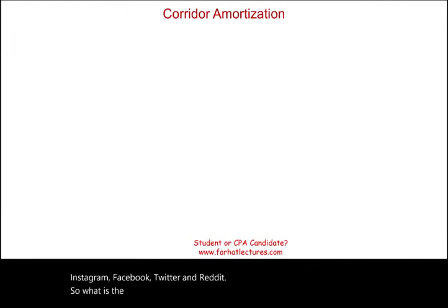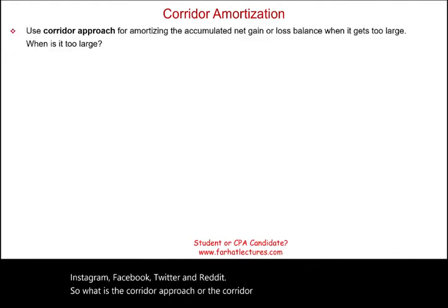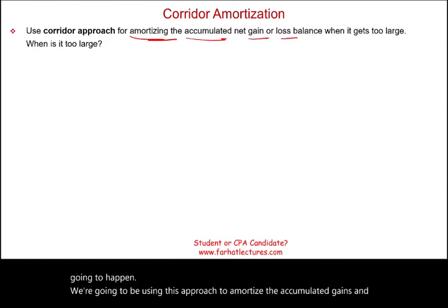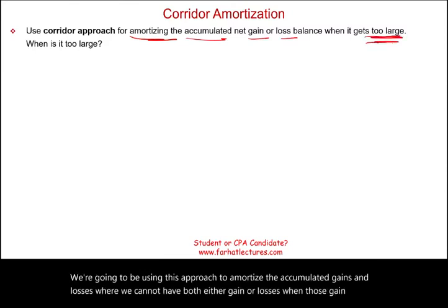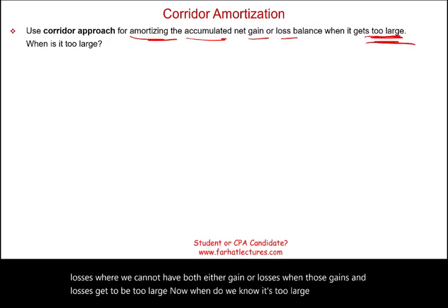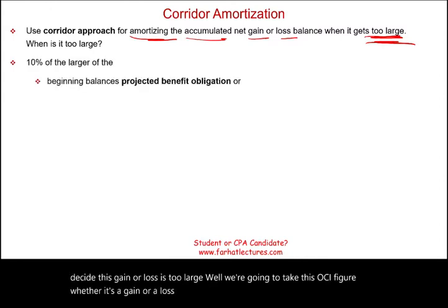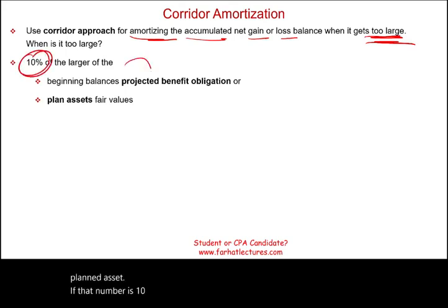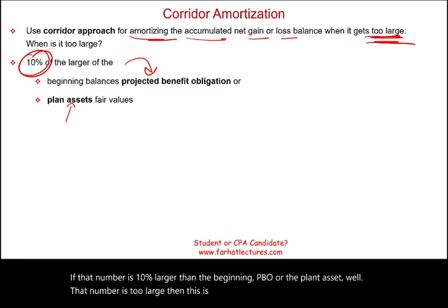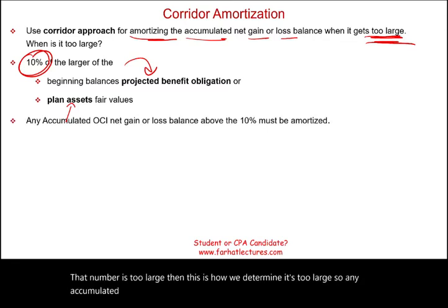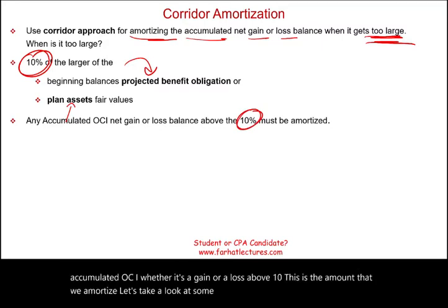So what is the corridor approach, or corridor amortization? We use this approach to amortize accumulated gains and losses — we cannot have both, it's either gains or losses — when those gains and losses get too large. How do we decide it's too large? We take the OCI figure, whether it's a gain or a loss, and compare it to the beginning PBO and the plan asset. If that number is 10% larger than the greater of the beginning PBO or plan asset, then the number is too large. Any accumulated OCI above 10% is the amount we amortize.